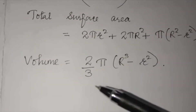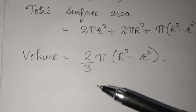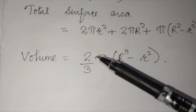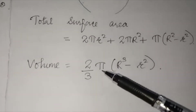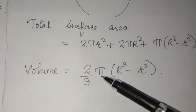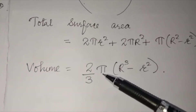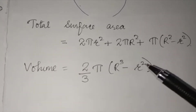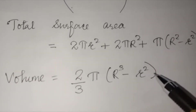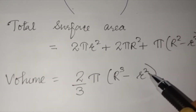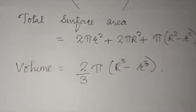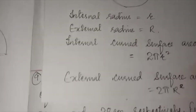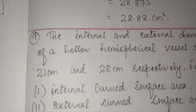To find the volume of a hollow hemisphere, the formula for a solid hemisphere is 2/3 πr³. For a hollow hemisphere, the volume of the material is 2/3 π(R³ − r³).